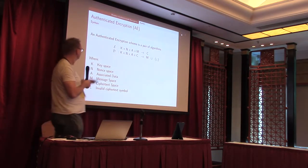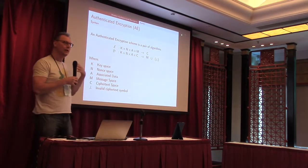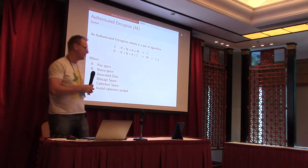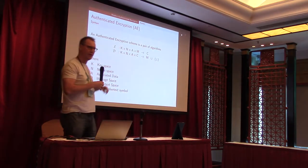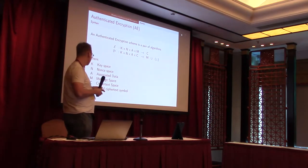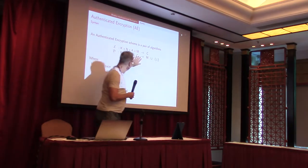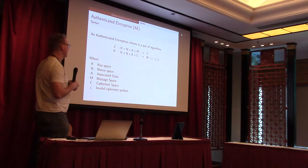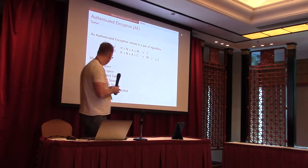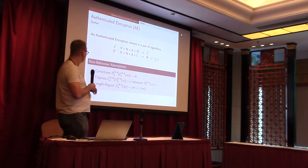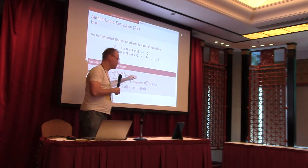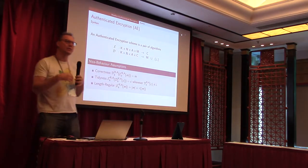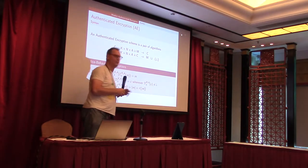Authenticated encryption uses a common syntax: the encryption algorithm takes a key, a nonce, associated data, and a message, and outputs a ciphertext — with the tag integrated into the ciphertext. Decryption takes the key, nonce, associated data, and ciphertext, and outputs either the message or a rejection symbol. There are three standard behavioral assumptions: correctness (encrypt then decrypt gives back the message), tidiness (if decryption succeeds, re-encrypting gives back the original ciphertext), and length regularity (ciphertext length depends only on message length).